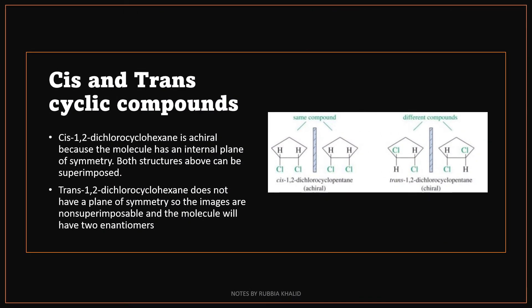Cis and trans cyclic compounds. Cis 1,2-dichlorocyclohexane is achiral because the molecule has an internal plane of symmetry. Both structures above can be superimposed.